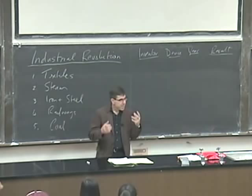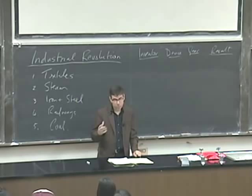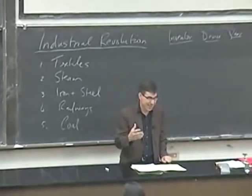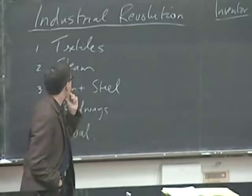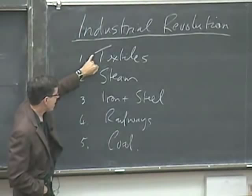Today we're going to describe more of the Industrial Revolution, and in particular we're going to consider what the meaning of the Industrial Revolution is. I'm going to give you some details here because I want to focus on interpreting what actually is the meaning of the Industrial Revolution. The classic core of the Industrial Revolution consists of very dramatic changes in five major industries.